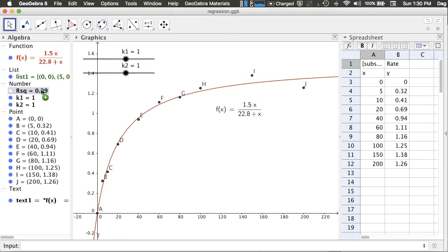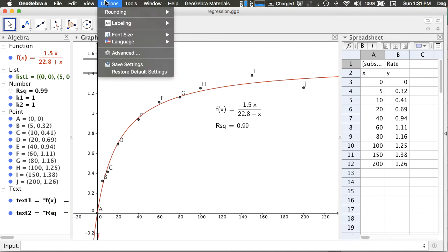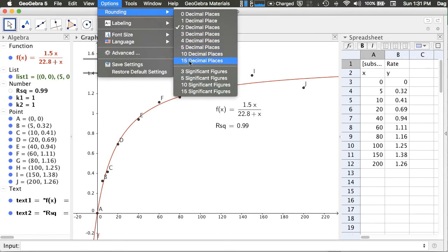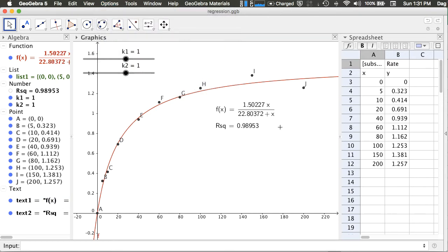Again, you can also display the r² by dragging it from the algebra panel to the graphics panel. In GeoGebra, we can also choose how many significant figures or decimal places that we want to display. We can go to options, rounding, and select five decimal places, perhaps.